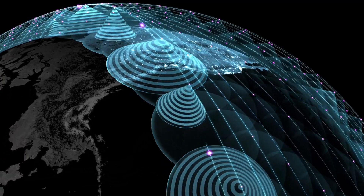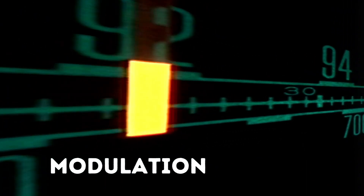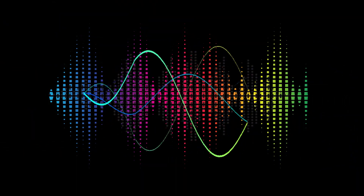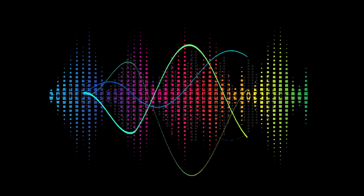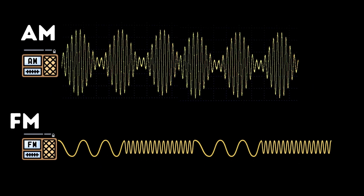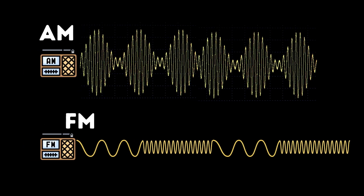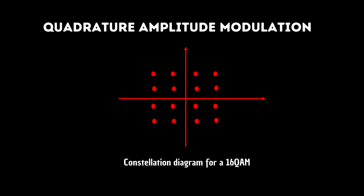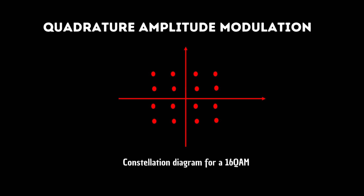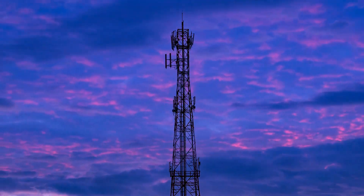Data is transmitted on a radio signal using a process called modulation — the process of encoding information onto a radio signal. There are several different types of modulation, each with their own advantages and disadvantages. The most common types used in wireless communication are amplitude modulation and frequency modulation. A more advanced type is quadrature amplitude modulation (QAM), which uses a combination of amplitude and phase modulation to transmit multiple bits of data at once. In 5G wireless communication systems, QAM is used in the physical layer to transmit data over the air interface.